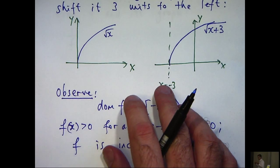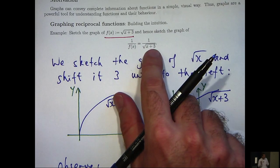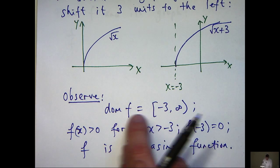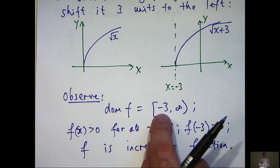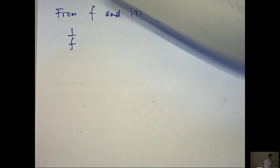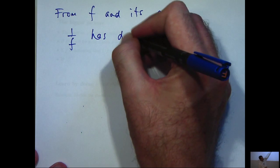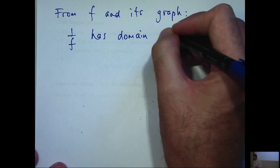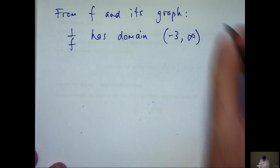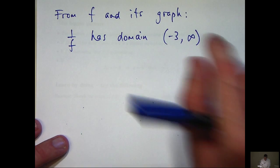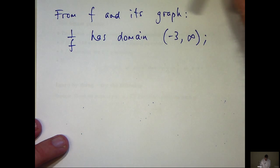Well, 1 on f will have almost the same domain. We do want to exclude the points, though, where we're dividing by 0. So f of x has a 0 at minus 3. So the domain of 1 on f will be this interval but with the point minus 3 removed. So we have an open interval here. So in other words, all those x points where x is strictly greater than minus 3.